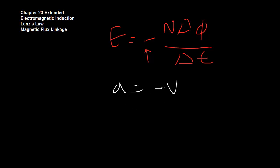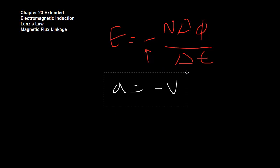The negative sign simply connotes a direction. But in here, EMF is a scalar quantity, magnetic flux linkage is a scalar, number of coils is a scalar, and time is a scalar. So this cannot possibly indicate direction. Well, you'll come to understand that the negative sign is actually important. It's not something we can just ignore, and it does have a lot of meaning, which I will go into shortly. And that's what I want to explain in this video.